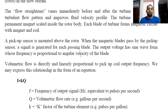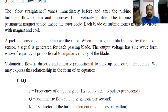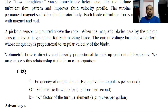The output voltage is a sine wave whose frequency is proportional to the angular velocity of the blade. The output frequency is directly and linearly proportional to the pickup coil output frequency. We may express this relationship as: Fn = k × Q, where Fn is the frequency output of the magnetic pick-up coil, k is the meter factor of the turbine element, and Q is the volumetric flow rate.